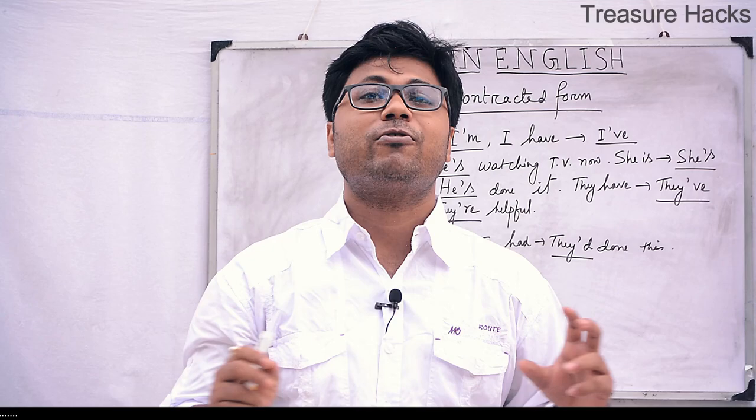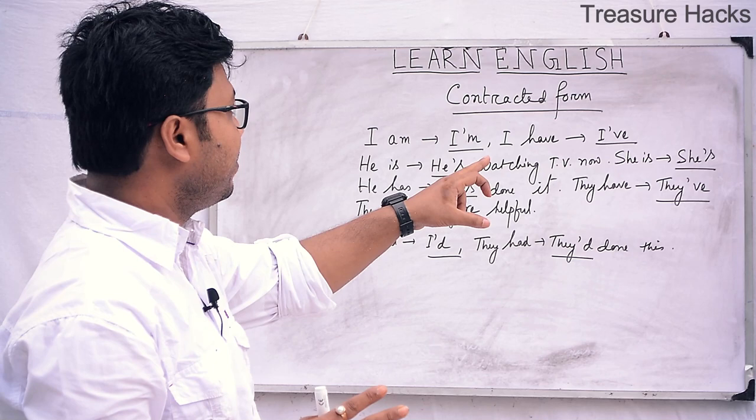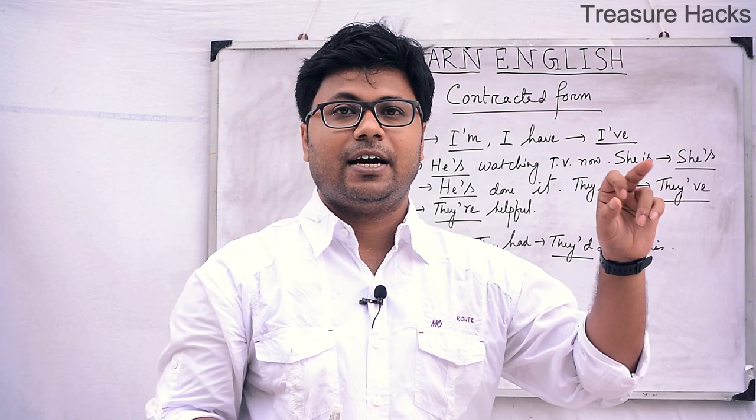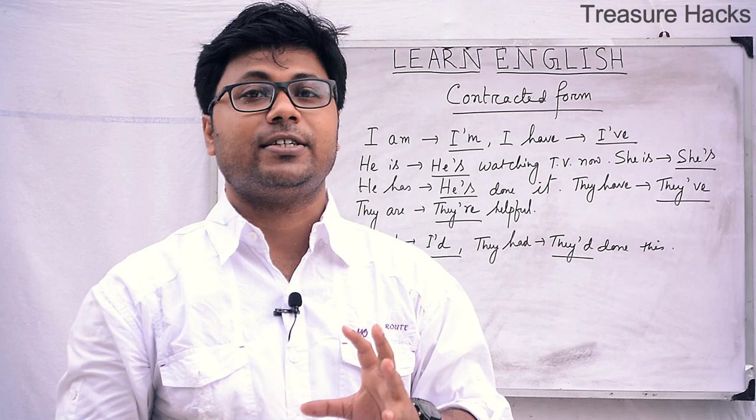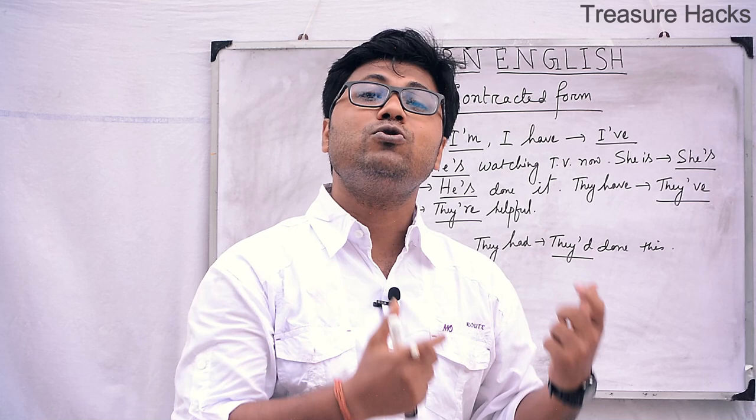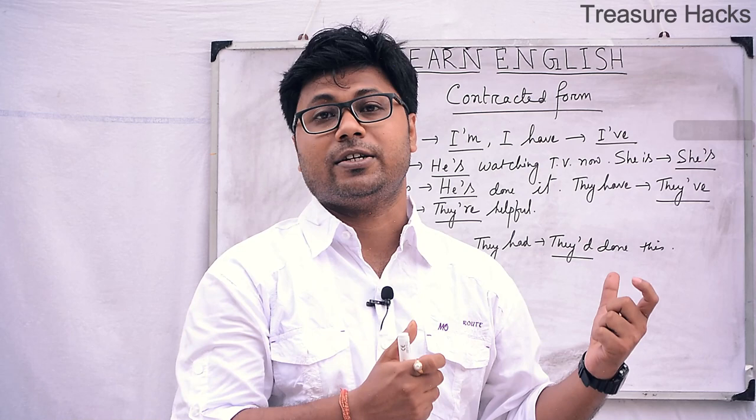'I have' in contracted form is written as I apostrophe VE — 'I've'. For example: 'I have done it' in contracted form is 'I've done it'. When using contracted form, remember: 'I have' contracts to 'I've'.